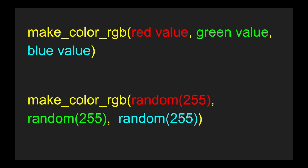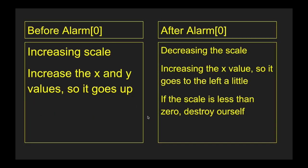To do this we're going to use the function make_color_rgb, which accepts three arguments: red, green, and blue values. Since we want it to be random, we'll use the random function — random(255), random(255), random(255).